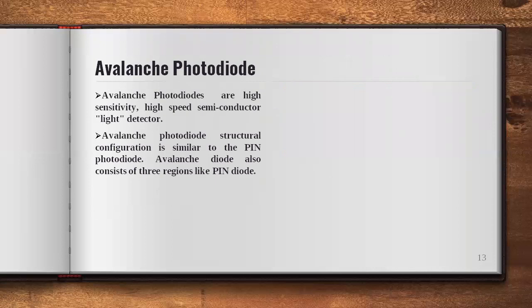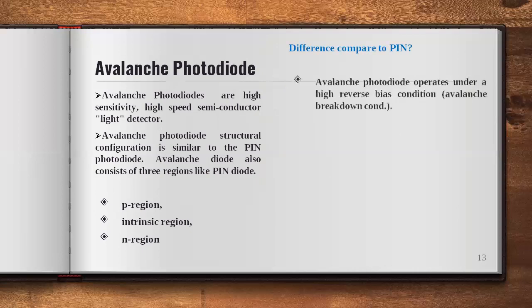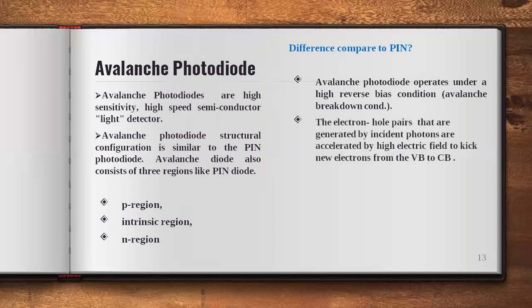The avalanche photodiode structural configuration is similar to the PIN photodiode — it also consists of three regions: P, I, and N. The difference is that the avalanche photodiode operates under a high reverse bias condition, near the avalanche breakdown condition. The electron-hole pairs generated by incident photons are accelerated by the high electric field, which kicks new electrons from the valence band to the conduction band.